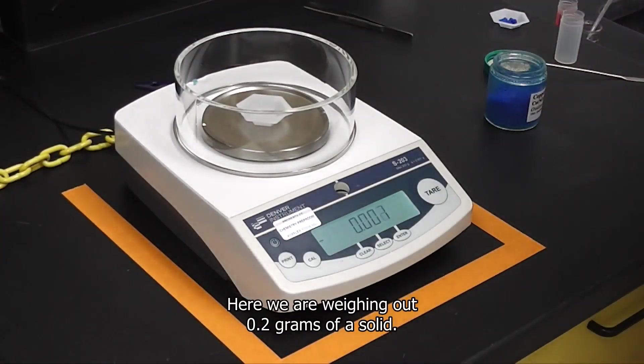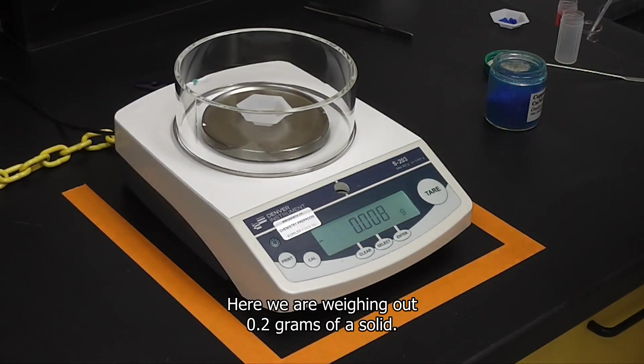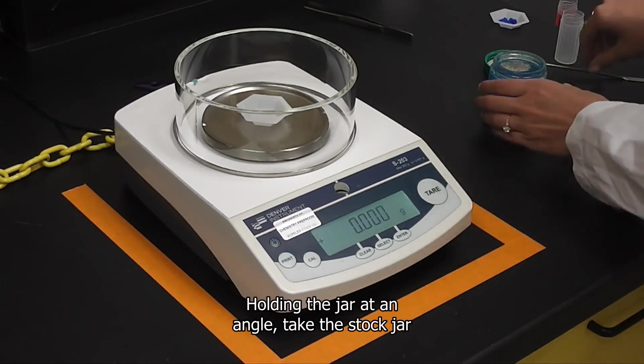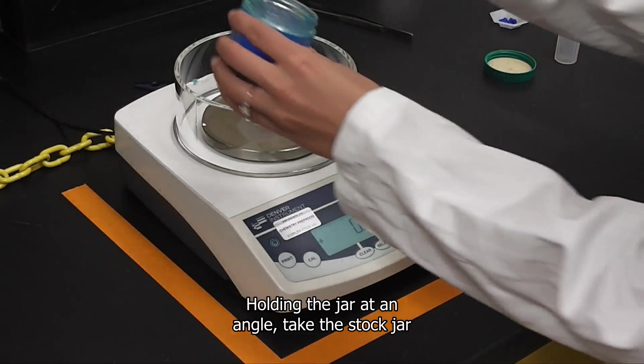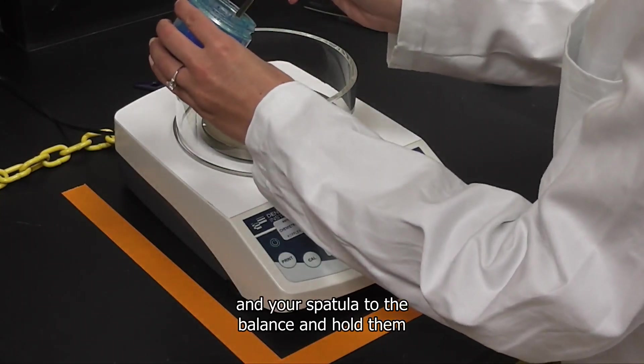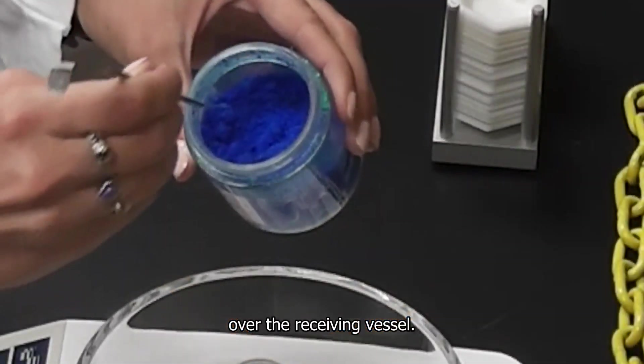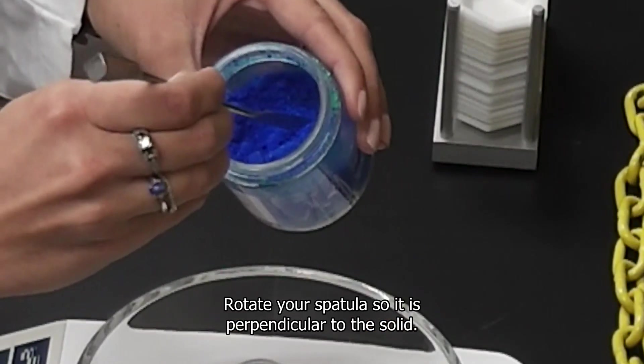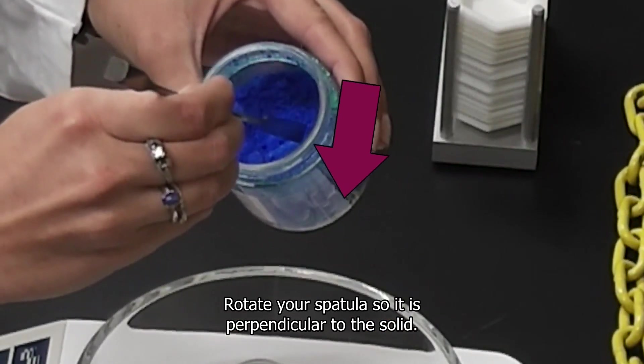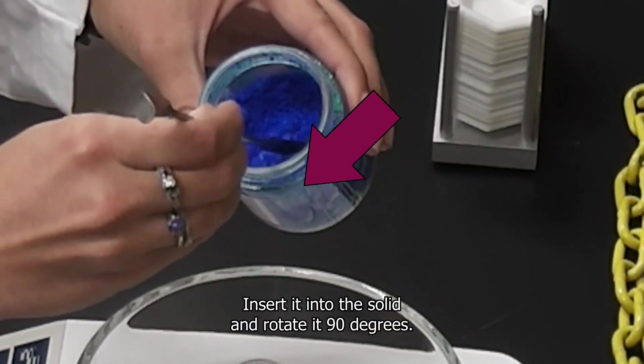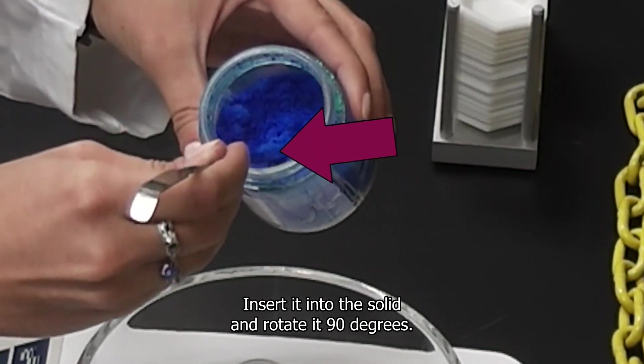Here we are weighing out 0.2 grams of a solid. Holding the jar at an angle, take the stock jar and your spatula to the balance and hold them over the receiving vessel. Rotate your spatula so it is perpendicular to the solid. Insert it into the solid and rotate it 90 degrees.